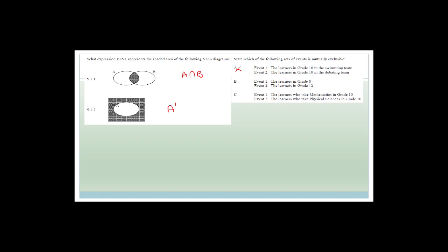The learners in grade 8 and the learners in grade 12 — they are mutually exclusive. A learner in grade 8 can't be in grade 12 and vice versa. The learners who take mathematics in grade 10 and the learners who take physical sciences in grade 10 — that is not mutually exclusive, because if you do physical science, you have to do maths.